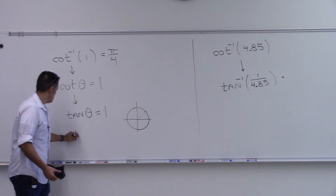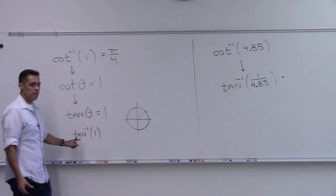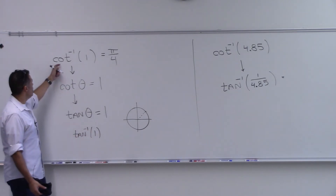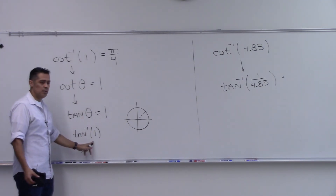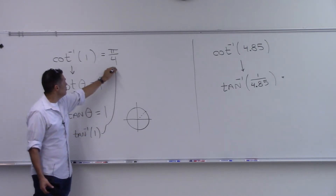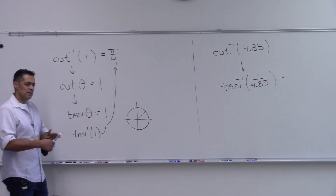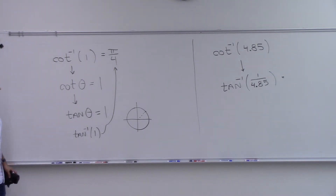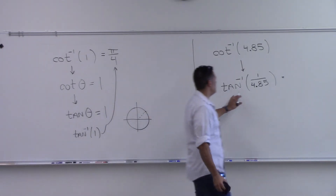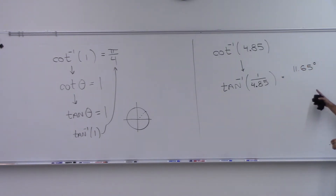That first one on the left — it's not a tangent inverse directly. Saying what's cotangent inverse of 1 is the same as saying what's tangent inverse of 1 flipped over, which gives 45 degrees or π/4. For cotangent inverse of 4.85: in degrees we get 11.65, and in radians 0.20.